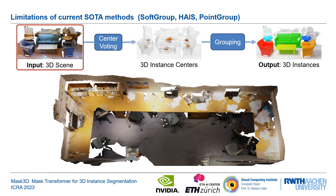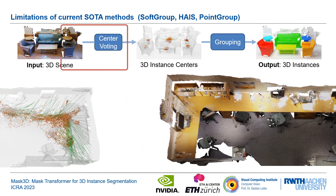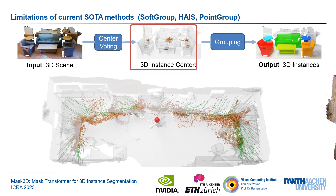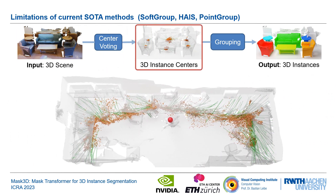In this example, we show a U-shaped table. Here, each point votes for its instance center, depicted as a red big point in the middle. We observe that center voting can fail for large and irregular shapes.